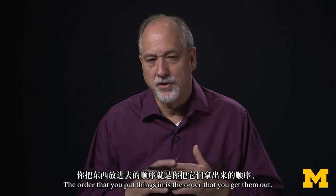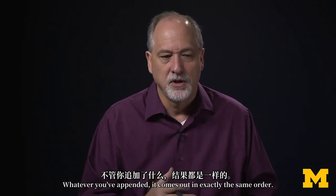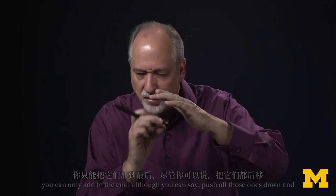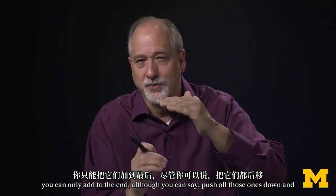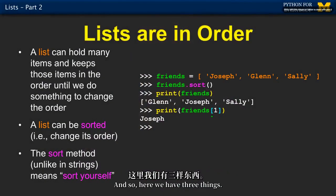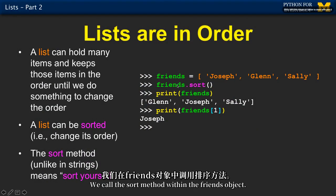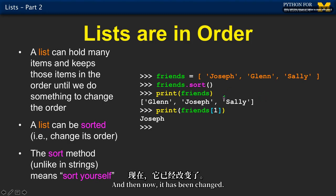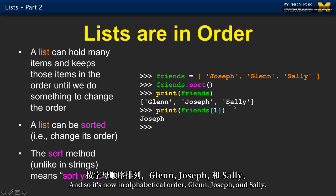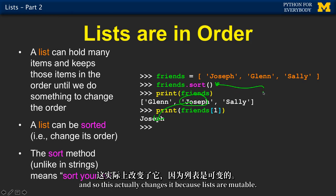Lists maintain order. The order that you put things in is the order that you get them out. Append, append, append — whatever you've appended comes out in exactly the same order. They're kind of dense and compacted, and you can only add to the end, although you can use insert to push things down and put something in the middle. But it also means we can sort them. We have three things — Joseph, Glenn, and Sally — and we say friends dot sort. This calls the sort method within the friends object. Now it has been changed and it's in alphabetical order: Glenn, Joseph, and Sally. This actually changes it because lists are mutable.